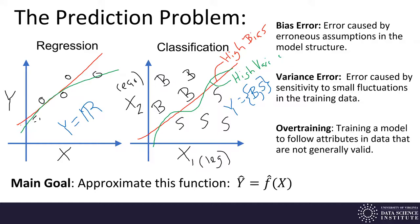One problem we have to deal with is called overtraining. Overtraining is when we train a model to follow attributes in data that are not generally valid. For example, in regression, if I chose the green model and concluded that as houses get larger they don't tend to gain as much value for their size — if I added more data and didn't see that trend continue, then I would say that model is overtrained.